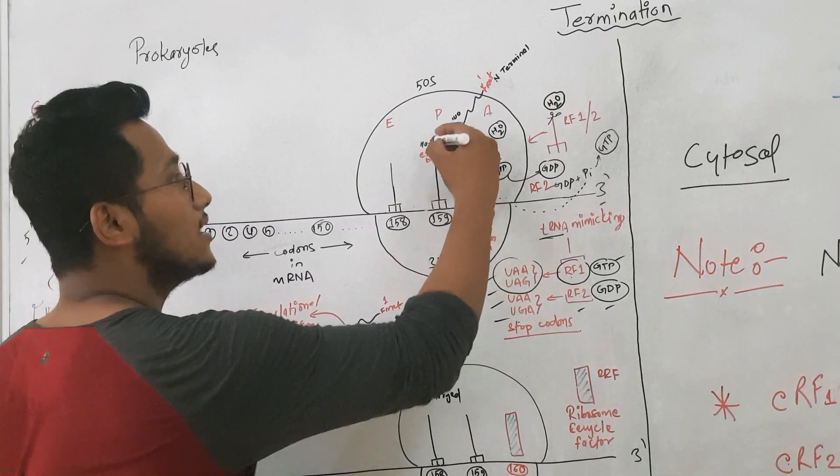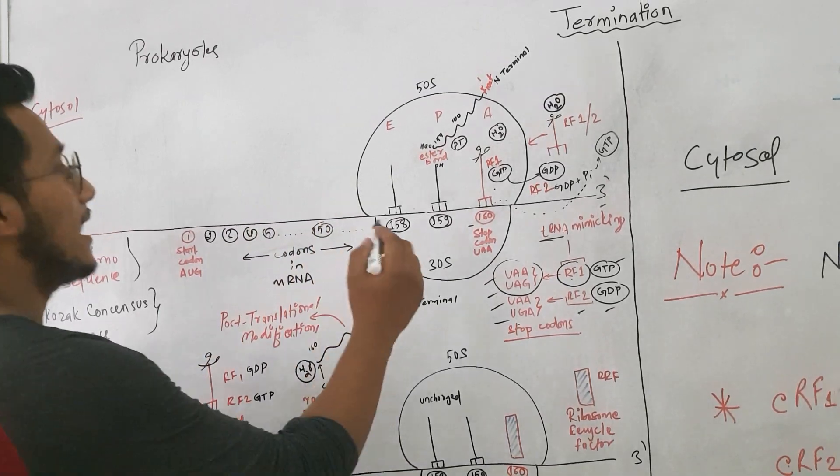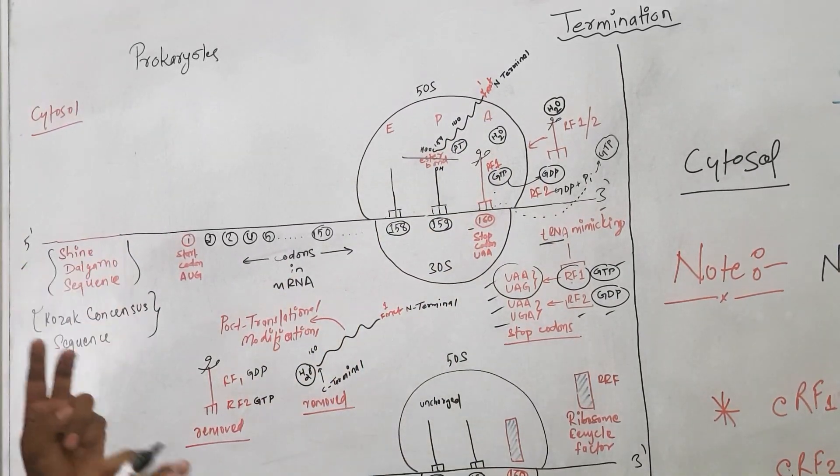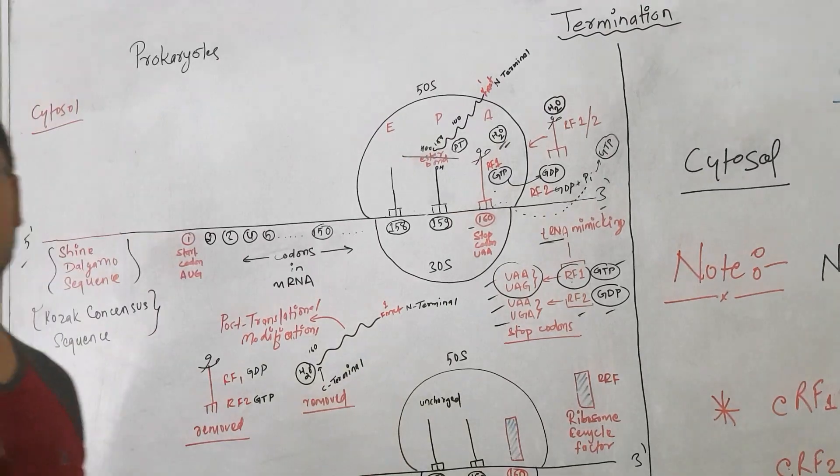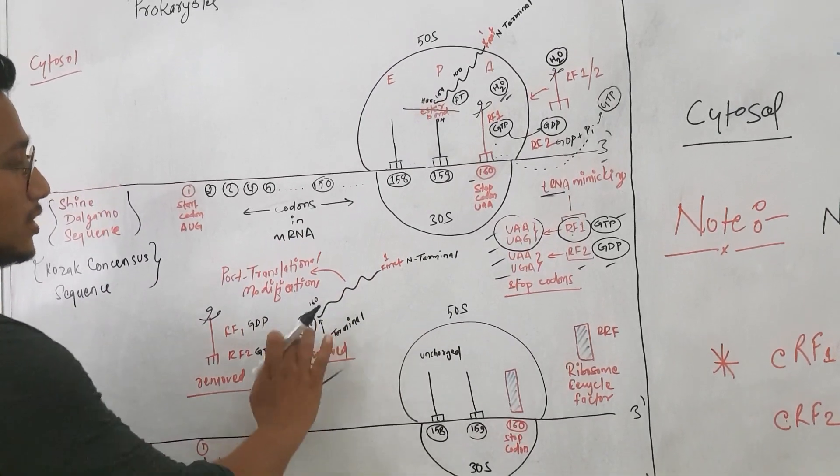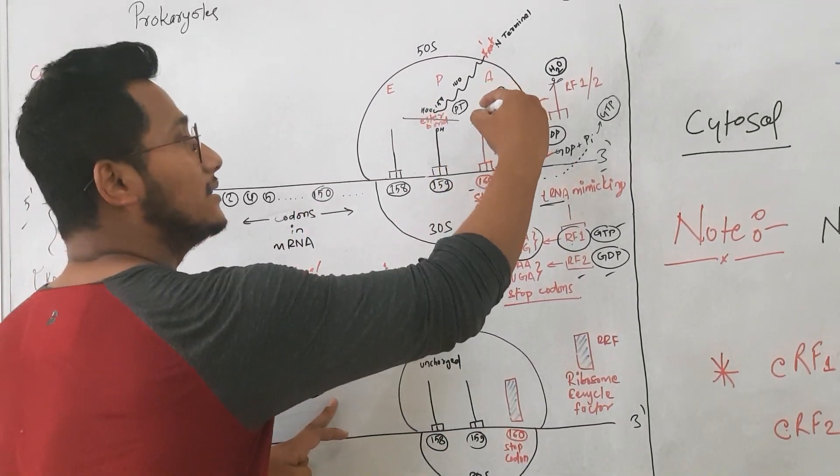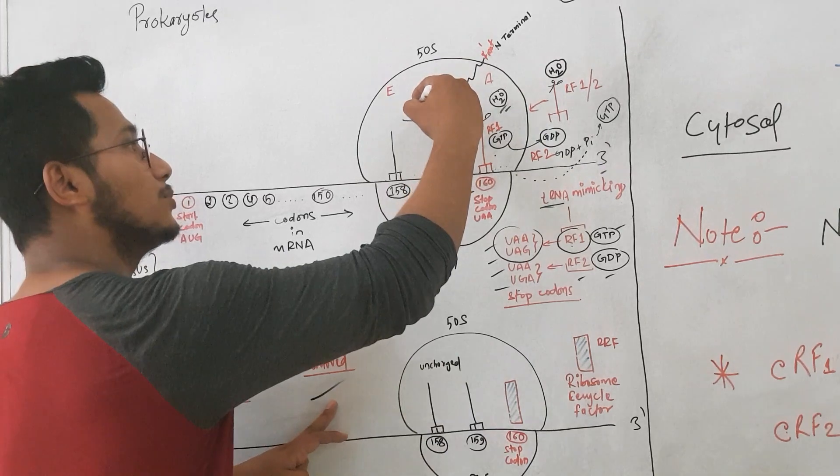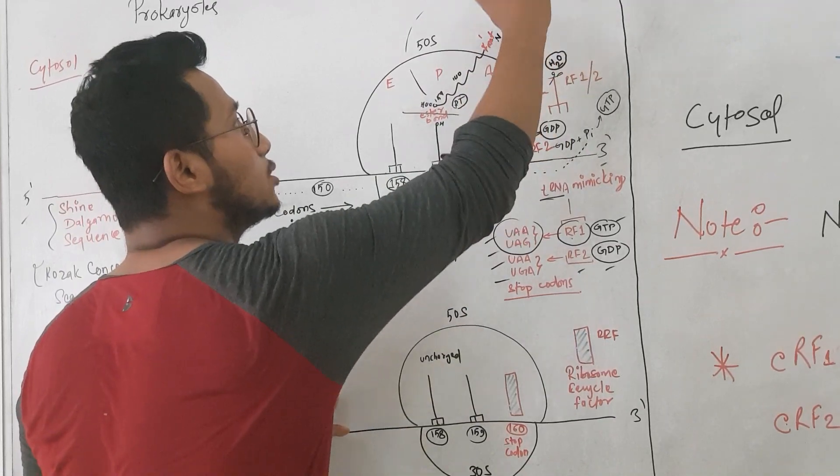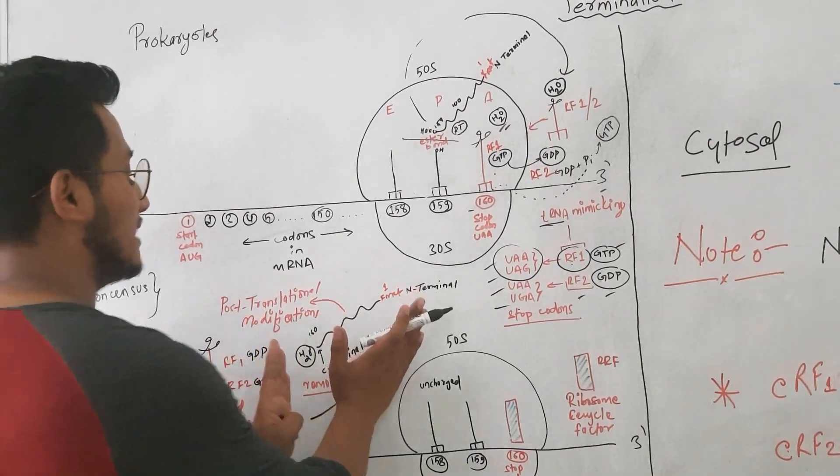In the P site, you can see there is this tRNA which is carrying a long chain of peptide which was synthesized through this whole process. Now, this peptidase domain of RF1 cleaves the ester bond, hydrolyzes the ester bond with the help of water molecules. As it hydrolyzes it, the polypeptide is removed—the long chain is removed.